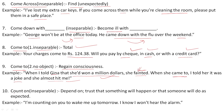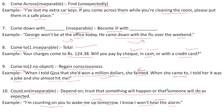Next is 'count on' and this is inseparable. It means to depend on someone or trust that something will happen or someone will do as expected. Example: I am counting on you to wake me up tomorrow — I know I won't hear the alarm.